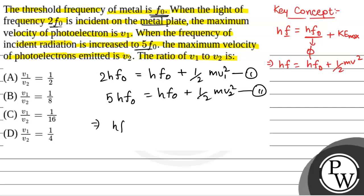So, we will have hf0 is equal to half m v1 squared, and 4hf0 is equal to half m v2 squared. Call this as equation 3 and this as equation 4.